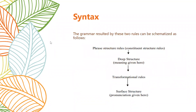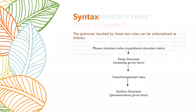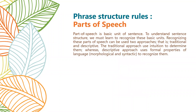If you look at the screen, you can see that phrase structure rules — also called constituent structure rules — are followed by transformational rules. In transformational rules, there is deep structure and surface structure. Deep structure is the underlying meaning of the sentence, while surface structure is the pronunciation — the articulated part of the sentence.